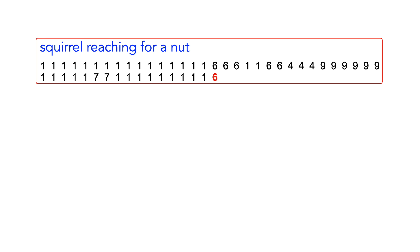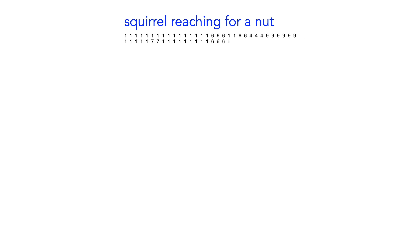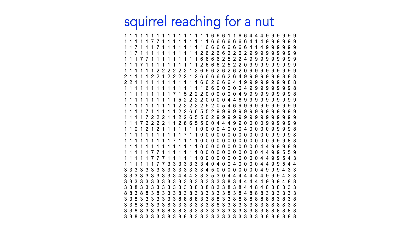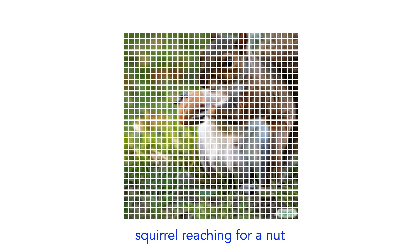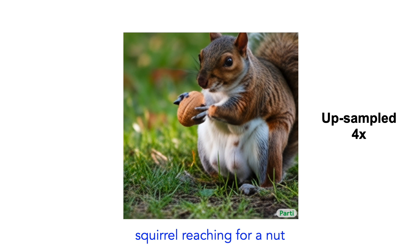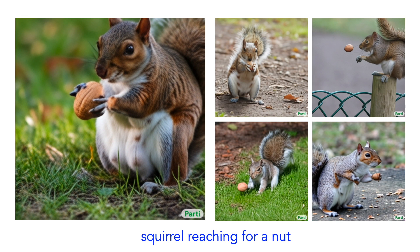If we keep going, we'll get a 32 by 32 grid of visual words. Next, Parti decodes these visual words into eight by eight image patches. And if you connect them together, you can see a squirrel reaching for a nut. Pretty cool. It's pretty low res, so Parti adds an upsampler to convert it to a high res image.